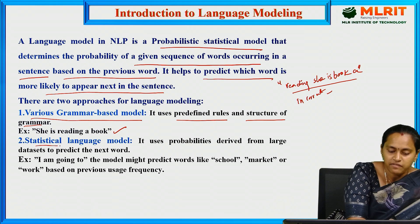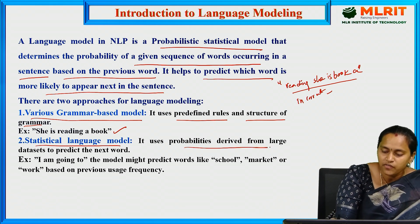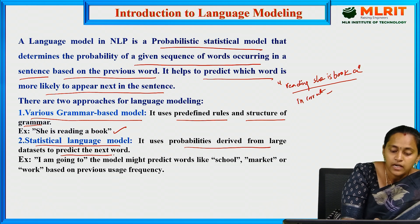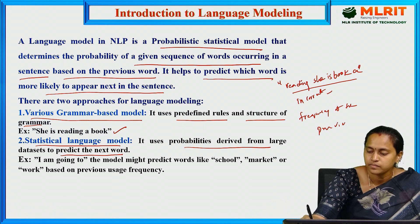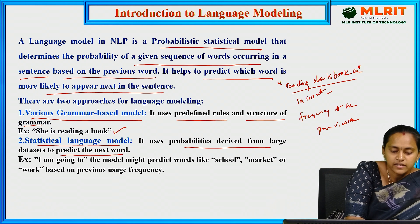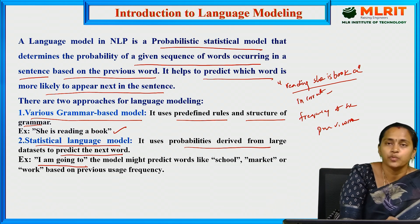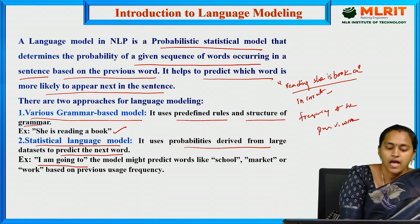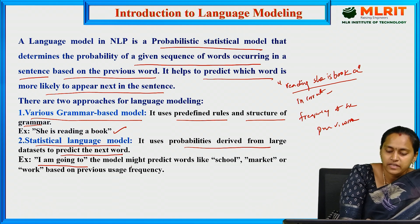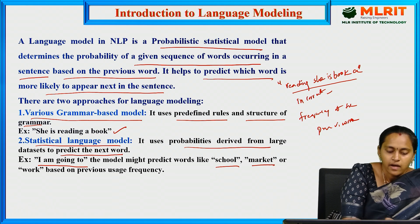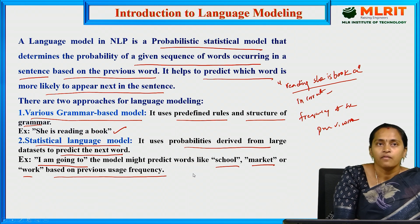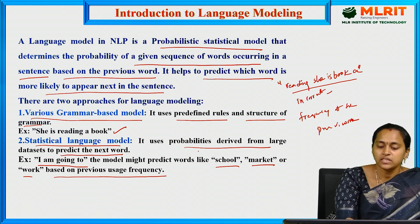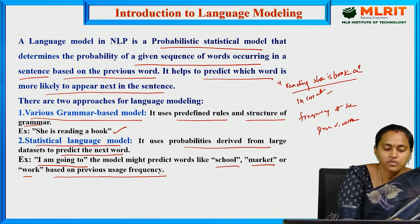The second approach is the statistical language model. It uses probabilities derived from large datasets to predict the next word — that means it uses the frequency of the previous word. For example, given the phrase 'I am going to,' the model automatically predicts words like school, market, or work based on previous usage. This is an example of the statistical language model defining probabilities based on previous words.